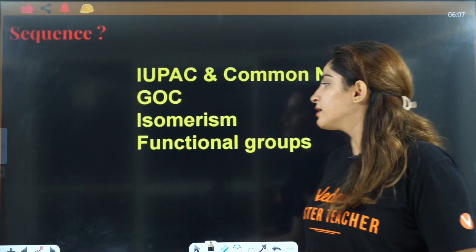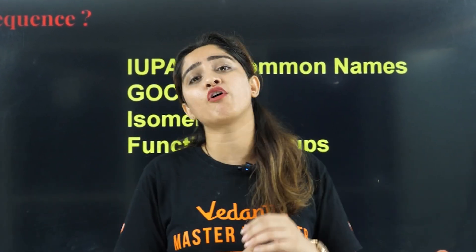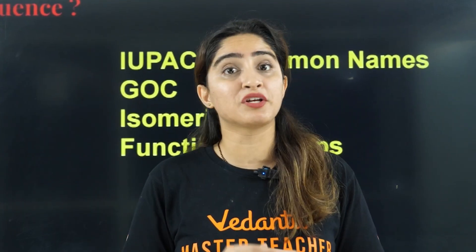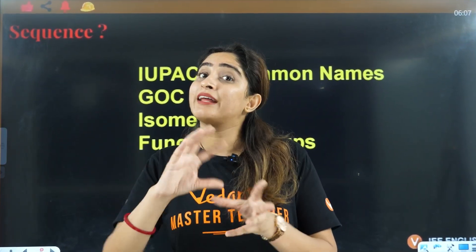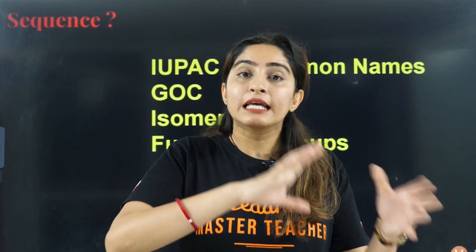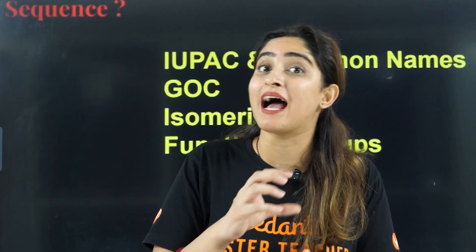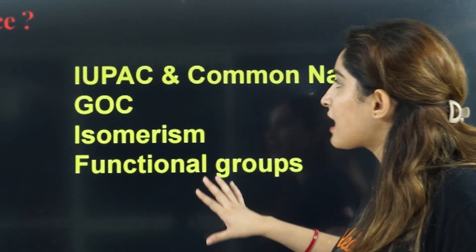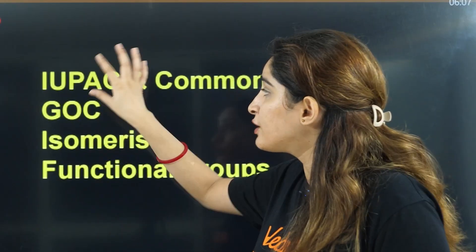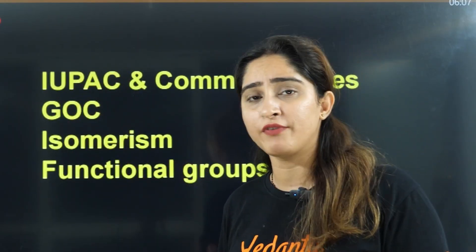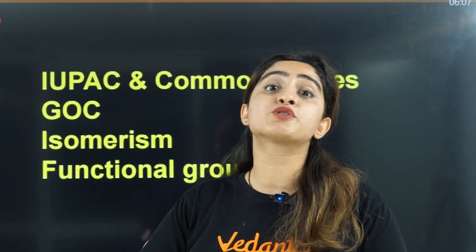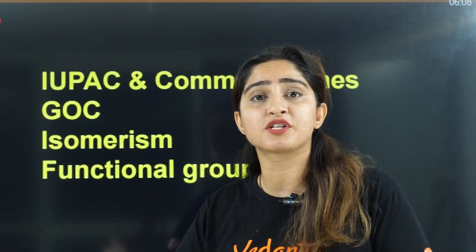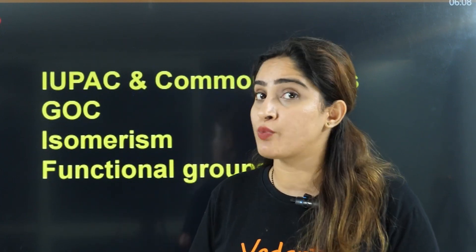If someone has backlogs from class 11 and directly studies haloalkanes or haloarenes, they will get lost. Even if they study the reaction, they won't know how to rearrange a carbocation, can't tell the rate of reaction because they don't know stability of intermediates, can't answer because they don't know IUPAC naming, and sometimes isomerism is also applied. So the first task — whether you're in class 11, 12, or a dropper — is to have IUPAC naming and common names on your tips. Then go through GOC: isomerism, all electron displacement effects, stability of intermediates, rearrangement of carbocations, ring expansion, ring contraction, tautomerism — all these effects that we apply in class 12 chemistry.